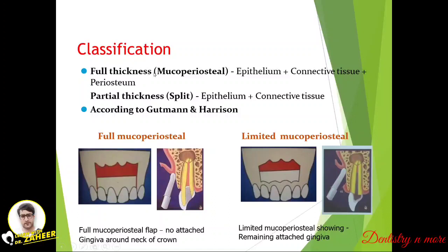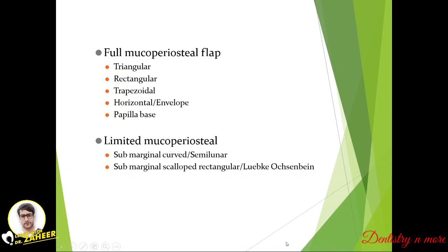For classification, we have full thickness — known as mucoperiosteal — and partial thickness, which is split thickness. Full thickness consists of epithelium, connective tissue, and periosteum, whereas partial thickness consists of epithelium and connective tissue with no periosteum. Based on the Guttman and Harrison classification, full mucoperiosteal flap has no attached gingiva remaining around the neck of the crown, while limited mucoperiosteal flap has remaining attached gingiva.